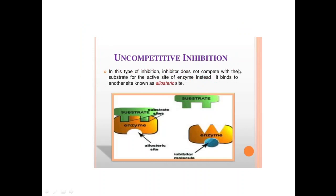Uncompetitive inhibition: in this type of inhibition, the inhibitor does not compete with the substrate for the active site of the enzyme. Instead, it binds to another site known as the allosteric site. It does not bind the substrate's site but binds to the other site on the enzyme called the allosteric site, and it also inhibits the completion of the reaction despite substrate binding.